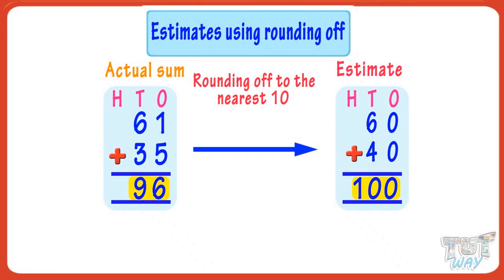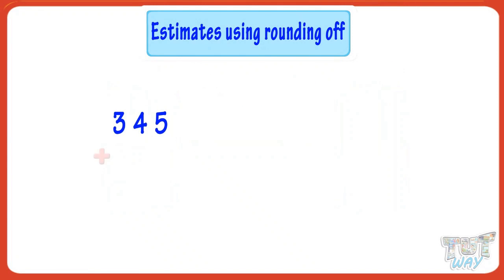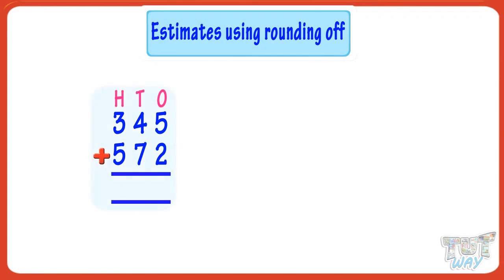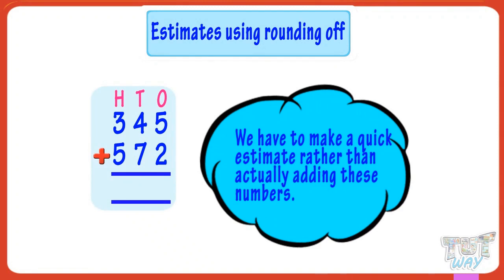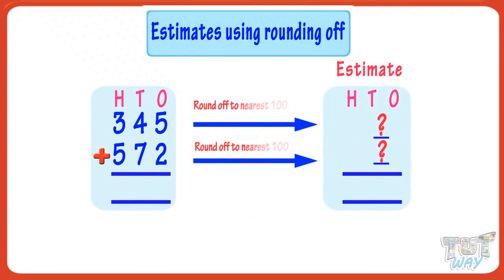Today we will be practicing making estimates only. Let's take another example. We have to add 345 and 572. We will make a quick estimate rather than actually adding these numbers, by rounding off these numbers to the nearest 100.